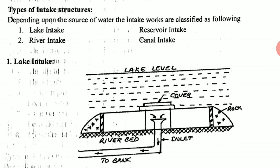Depending upon the surface source of water, the intake works are classified as lake intake, river intake, reservoir intake, and canal intake. We can classify them and the purpose and functions are the same. The main function of the intake works is to collect water from the surface source and then discharge water, collected by means of pumps or directly to the treatment plant.